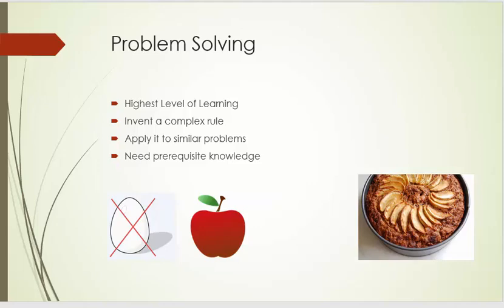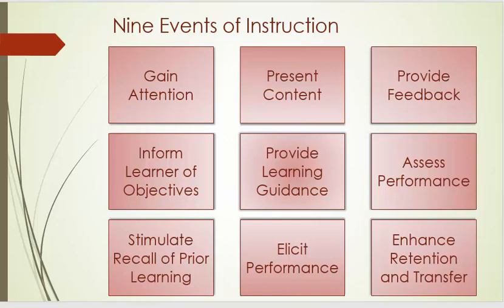Problem solving is the highest level of learning, and it is when you can invent a complex rule and then apply it to similar problems. To do this, you need prerequisite knowledge. A good example of this is I'm a good cook, and so I know that I can substitute an apple for egg to make a cake. I can then apply this, if I need to make cookies and have no eggs, to use an apple as the rising agent to make a cookie.